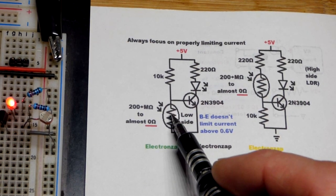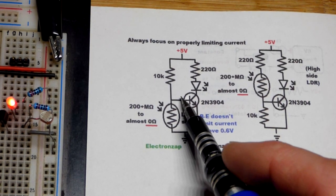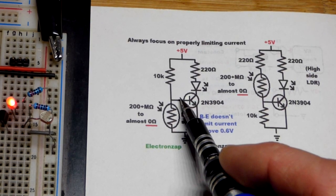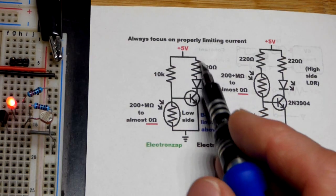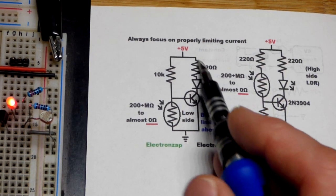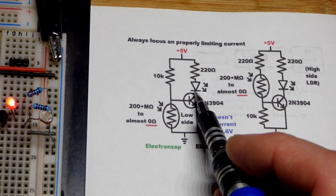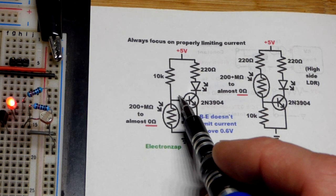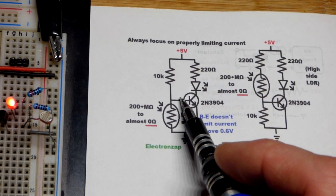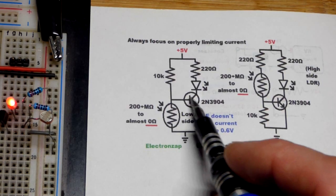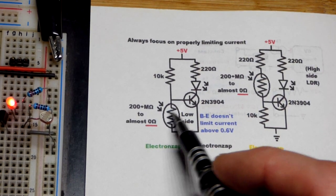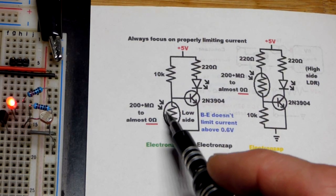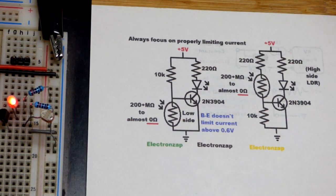But it's always safe to put a light-dependent resistor on the emitter side of a bipolar junction transistor because current does not flow through the collector. Sometimes, you might put the collector directly to a positive supply. Even if you did, it doesn't flow from collector to base. The transistor is made to not do that. It only lets current flow from base to emitter right there and collector to emitter. So, you're safe not having to put any other resistance in series with the light-dependent resistor in order to try to limit current.